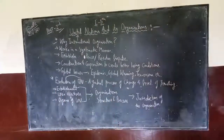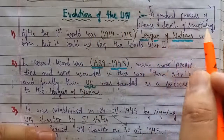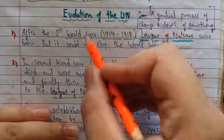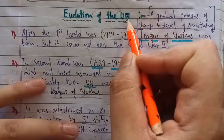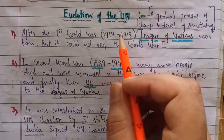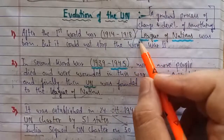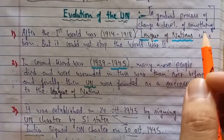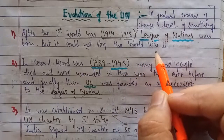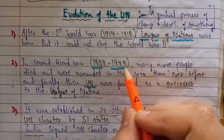Evolution here means a gradual process of change and development of something — growth, development, and modifications. So we are talking about the growth, development, and modifications of the United Nations with the passage of time. After the First World War — dated 1914 to 1918 — there was the establishment of an international organization called the League of Nations, which was established to stop another world war. But it could not fulfill its aim, and the Second World War again took place in 1939 to 1945.